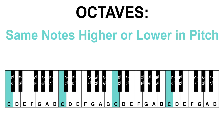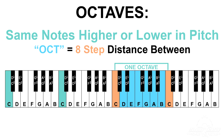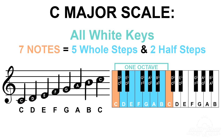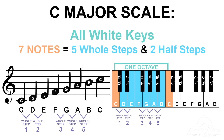Octaves are notes that you hear as being the same in spite of being higher or lower in actual pitch. Play middle C on the piano, then go up the C major scale on the white keys, and the eighth note you play will be another C an octave higher. The 'oct' part of the word refers to this eight-step distance up the scale. The five whole steps in C major are C to D, D to E, F to G, G to A, and A to B. The first half step is E to F, and the second half step is B resolving back to the next octave C.